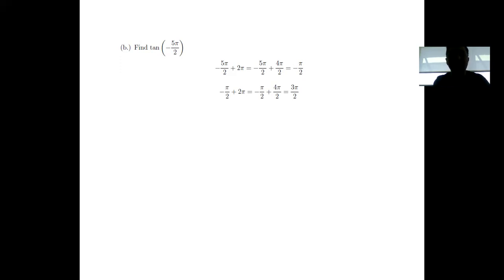When this happens, you'll just again add a 2π, add one more circle rotation. Negative π over 2 plus 4π over 2 will result in 3π over 2.